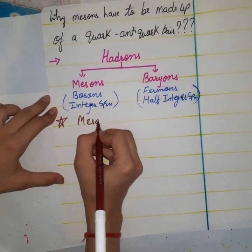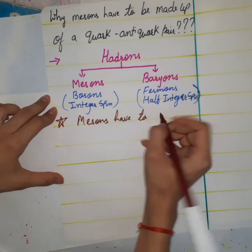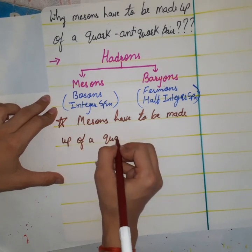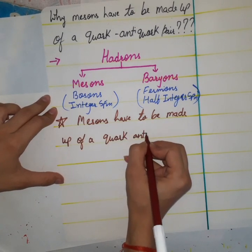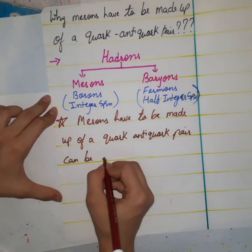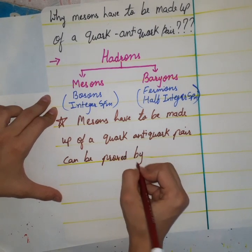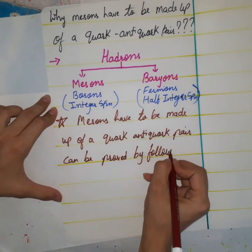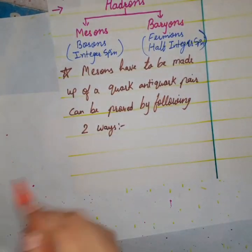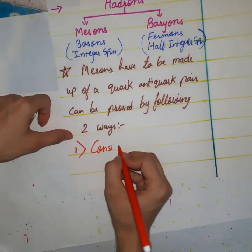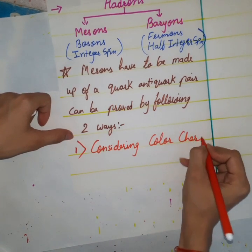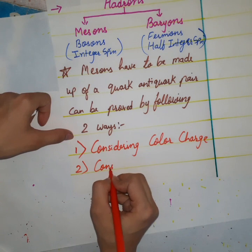That mesons have to be made up of a quark-antiquark pair can be proved by following two ways: the first one is by considering the color charge, and the second one is by considering the baryon number.